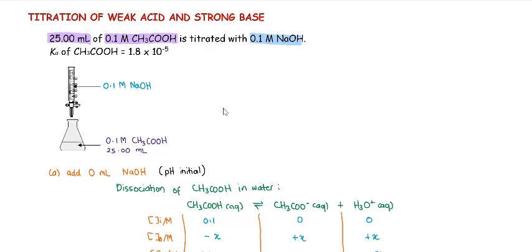Now let's have a look at the titration of weak acid and strong base. Let's say you have 25 mL of 0.1 molar acetic acid, titrated with 0.1 molar sodium hydroxide. Since you have the volume and concentration of acetic acid, acetic acid is going to be your analyte and sodium hydroxide is going to be your titrant.